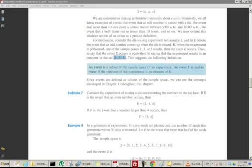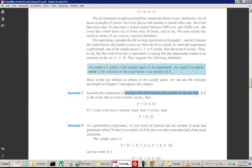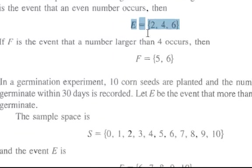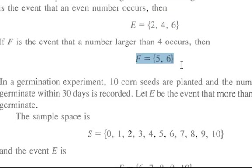Let's look at example 7. Consider the experiment of tossing a die and recording the number on the top face. If E is the event of getting an even number, and if F is the event of getting a number larger than 4, then F would be this subset — it's a subset of the sample space.